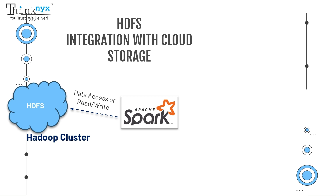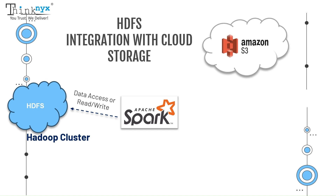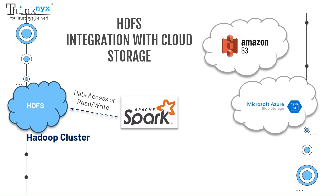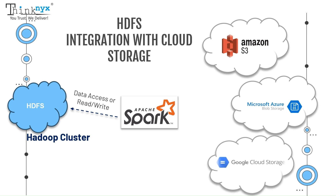Now let's understand the integration of Apache Spark with cloud storage. Cloud providers like AWS S3, Azure Blob Storage, and Google Cloud Storage provide scalable solutions for storing massive amounts of data. Spark can access and process data stored on those cloud storage systems just like it would with HDFS, making Spark a great option for cloud-native big data applications.